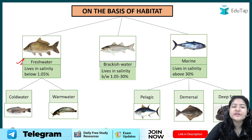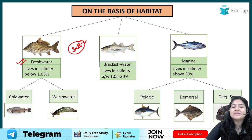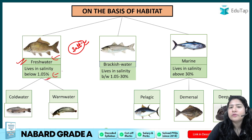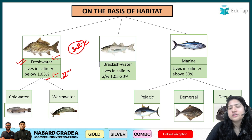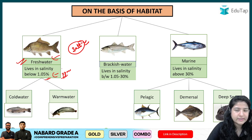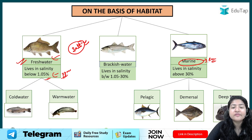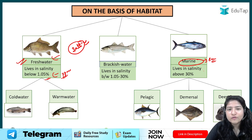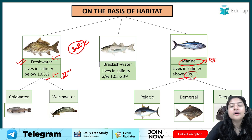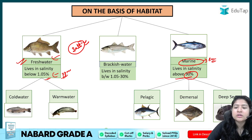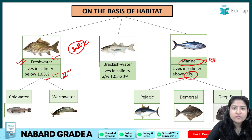There are three broad types of water bodies. Fresh water bodies have salinity below 1.05 percent. Marine or sea water bodies have salinity above 30 percent. These are the two extreme ranges — below 1.05 percent is fresh water, and above 30 percent is marine water.